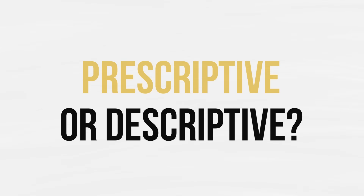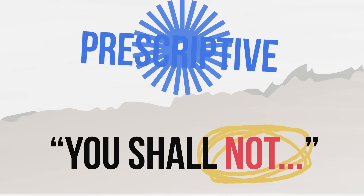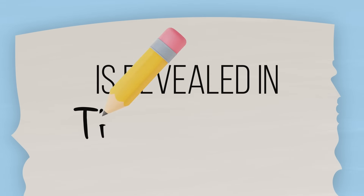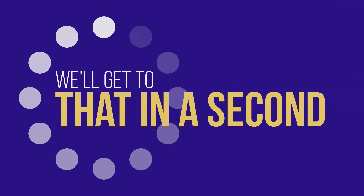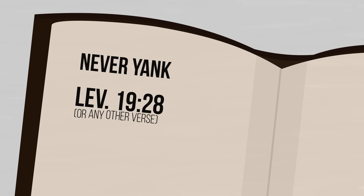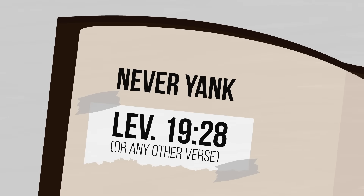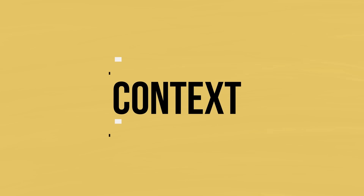Let's S — seek the truth — trying to put aside our biases. Then we go to P: prescriptive or descriptive. Well, since this starts with 'you shall not,' it's pretty obvious — it's prescriptive. The A, author's intended message, is revealed in the context, as it often is. But before we get there, let's never yank Leviticus 19:28 or any other verse out of its proper place, which means we've got to put it back where it belongs in order to truly see the C for context.